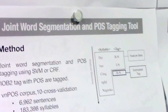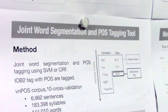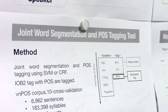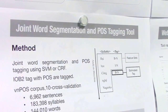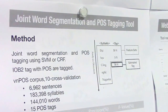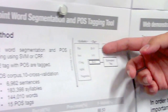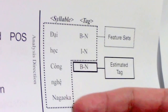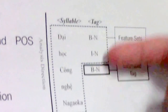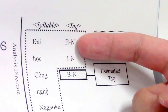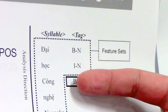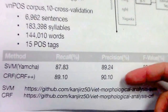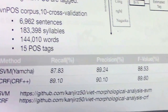Next, I will explain our development of joint word segmentation and part-of-speech tagging tools. This method is simple. We use IOB tags combined with part-of-speech tags for predicting word boundaries and part-of-speech tags. For example, 'Đại học Nagaoka' means Nagaoka University of Technology. We add IOB tags with part-of-speech tags and predict them. The result shows our analyzer achieves high recall, precision, and F-value.